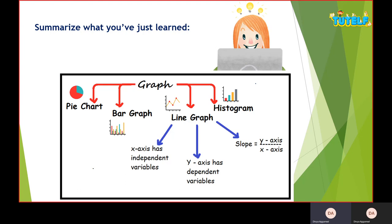Let's do a quick revision. We have 4 types of graphs: pie chart, bar graph, line graph, and histogram. We have studied the line graph in detail. In the line graph, there is x-axis with independent variable - basically time. There is dependent variable on y-axis: distance, speed, acceleration, etc. And the slope is interval of y-axis divided by x-axis.